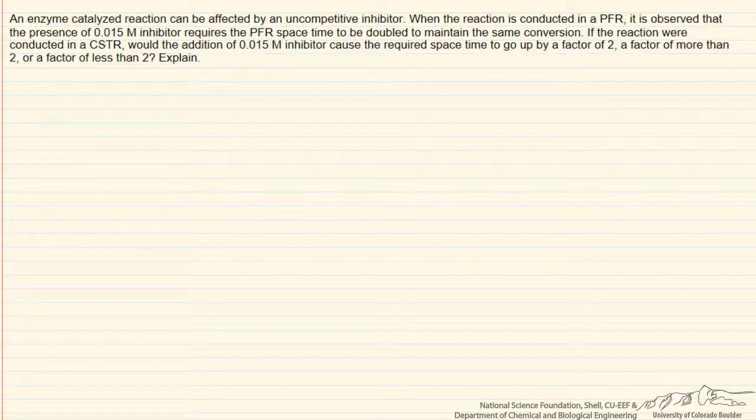This problem involves uncompetitive inhibition of an enzyme-catalyzed reaction and looking at the effects of an inhibitor on the performance of a PFR compared to a CSTR. A PFR has half the space-time required to achieve the same conversion as a CSTR in the absence of an inhibitor, and we want to find out if that ratio of 1 to 2 is any different when we have an inhibitor present.